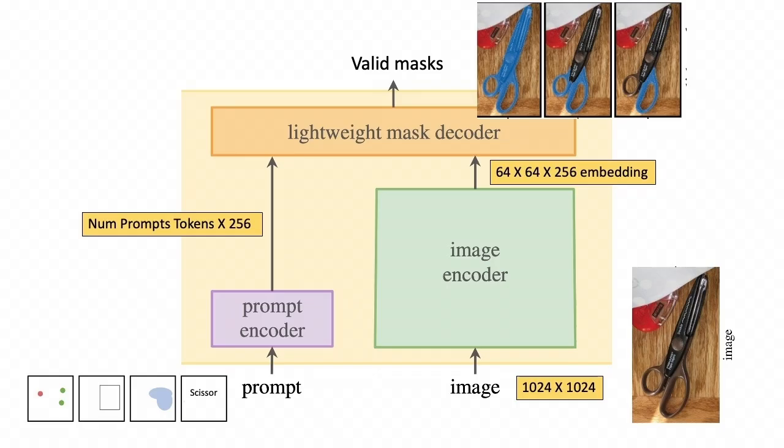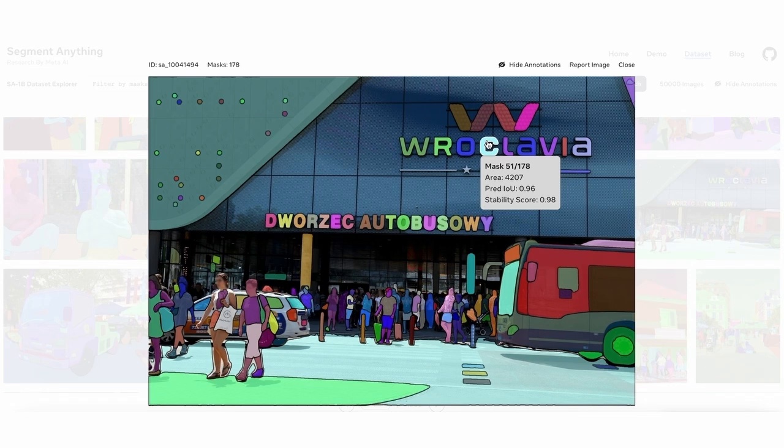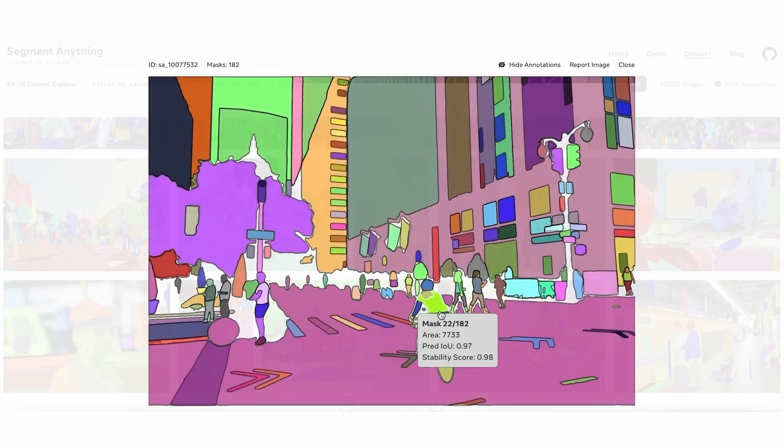SAM additionally also predicts the IOU score for each of the three masks. This is simply trained using the mean square error loss between the prediction and the actual IOU calculated between the mask and the ground truth. This is super useful because this allows SAM to output its own confidence score which can be used to rank all the masks it predicts and also to determine if SAM is unconfident about all of its predicted masks.